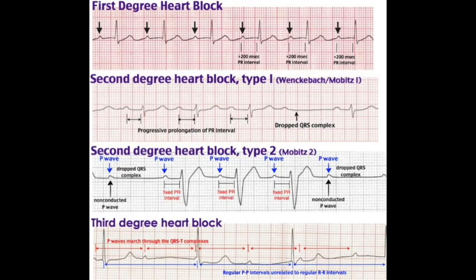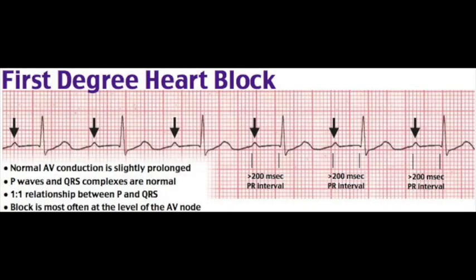AV blocks are an interruption of the normal impulse from the SA node to the AV node — AV node dysfunction. The PR interval is most helpful in determining an AV conduction block. First-degree AV block: AV node dysfunction leading to delayed but conducted impulses. Etiologies: normal variant in high vagal tone individuals, inferior wall MI (important), electrolyte disturbances like hyperkalemia, AV nodal blocking agents (digoxin, beta blockers, calcium channel blockers), myocarditis due to Lyme disease, and cardiac surgery.